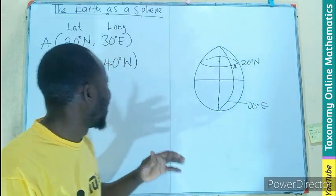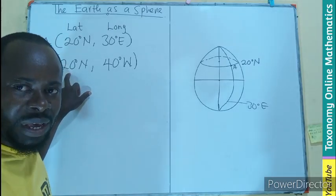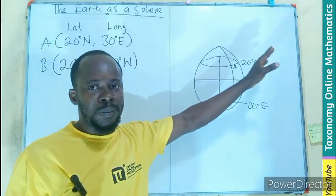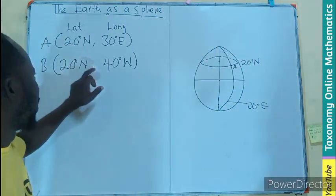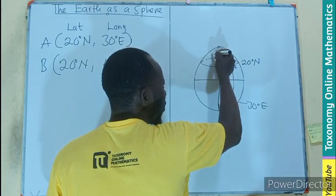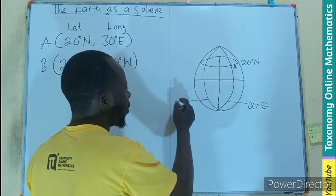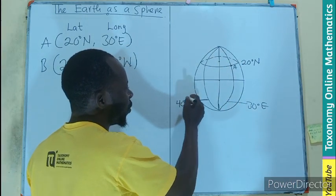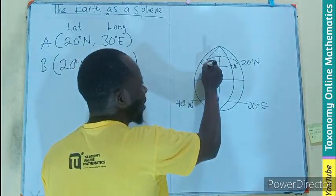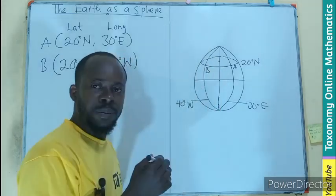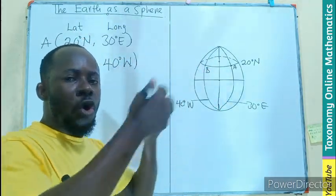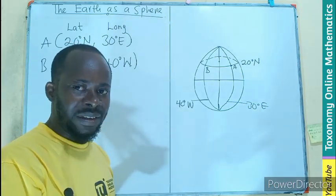Then, if I am going to indicate this point B, which is also on the same latitude, no need to draw another latitude. It is already there. So, I will only indicate the longitude to the west. I have my 40 degrees to the west. So, the intersection of the latitude and the longitude also give us the point B.